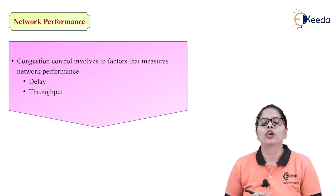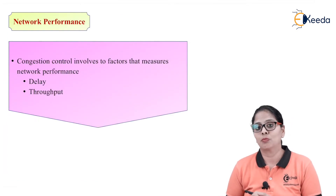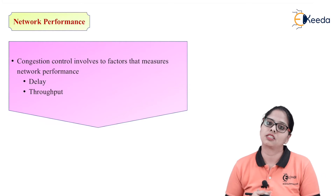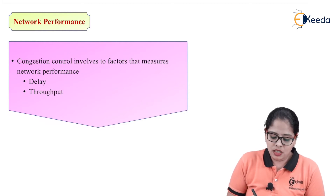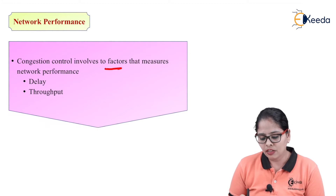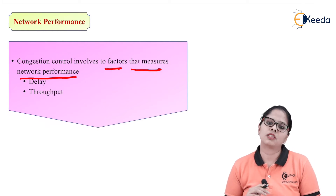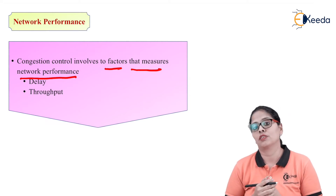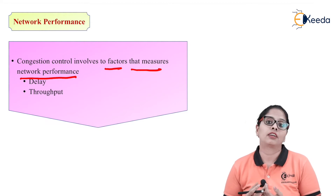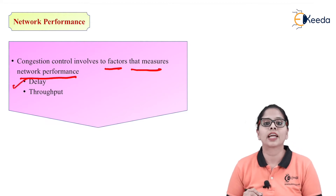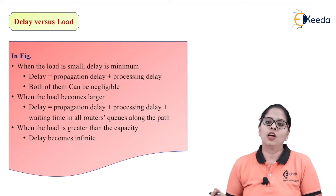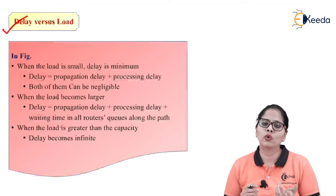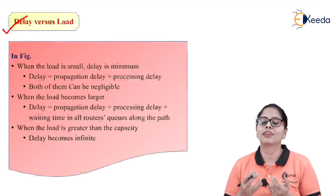Congestion control involves two factors that measure network performance. Congestion affects network performance in two ways: the first factor is delay and the second factor is throughput. Let us discuss delay versus load — we go on varying the load and find out how it affects the delay.